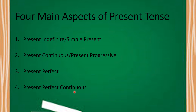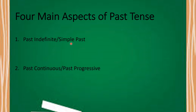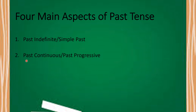Now, there are four main aspects of present tense. Similarly, we shall be talking about four main aspects of past as well as future tense. The four main aspects of past tense are: number one, past indefinite or simple past; number two, past continuous or past progressive.